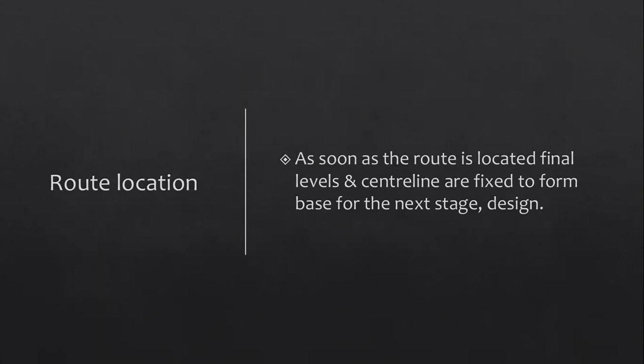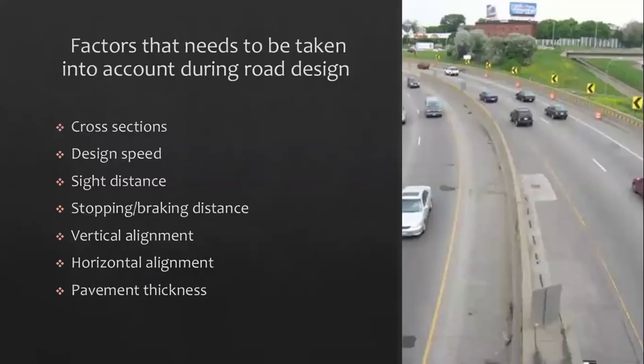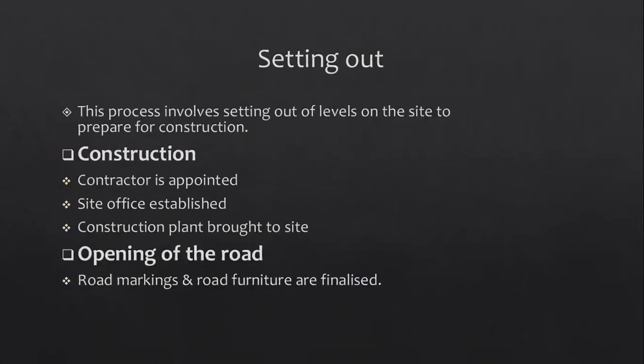For road design, the factors to take into account are cross sections, design speed, sight distance, stopping and braking distance, vertical alignment, horizontal alignment, and pavement thickness. First, you set out your road — this process involves setting out levels on the site to prepare for construction.